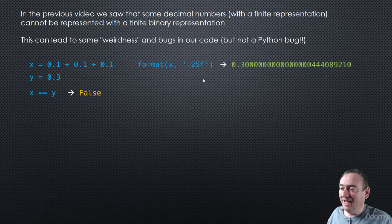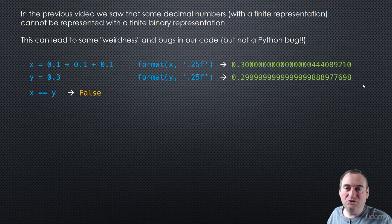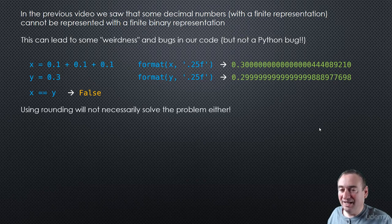We can look at what the numbers actually are. X is this number, y is this number. As you can see, they're not exact — that's their internal representation converted back to decimal. But we can see they're not the same, and that's why it evaluates to false.